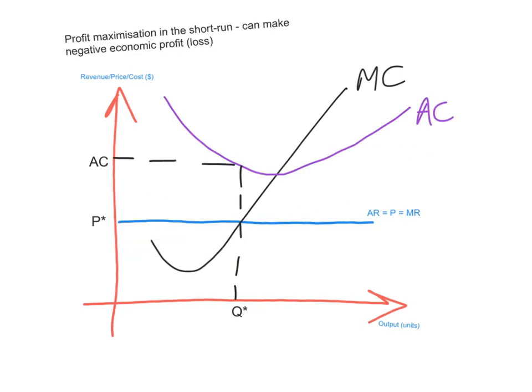Here's another situation of profit maximization in the short run — a firm making a negative economic profit or a loss. The profit-maximizing (or loss-minimizing) level of output occurs at the intersection of marginal cost and marginal revenue. Going down to the output axis gives Q star, and P star is the price.